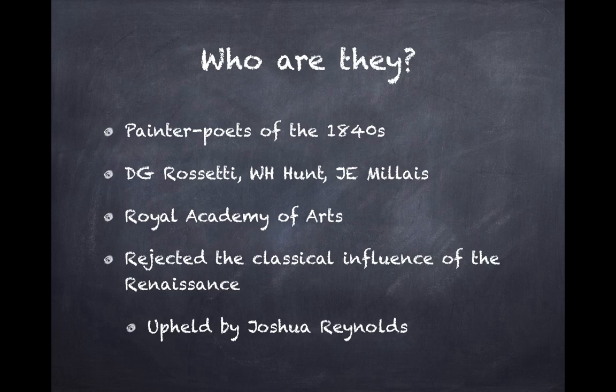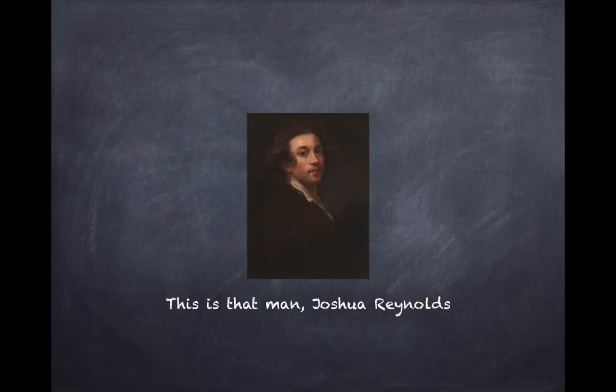The Royal Academy of Arts had a founder president, Joshua Reynolds. Joshua Reynolds had brought into Western art — into British art — the classical influence that started with the Renaissance. This is the man; it is his self-portrait. He was one member of the Johnson Circle — Dr. Johnson's Circle. He was an overweening presence in British art in the 18th and 19th century, and Joshua Reynolds upheld the classical style that started with the Renaissance in England.